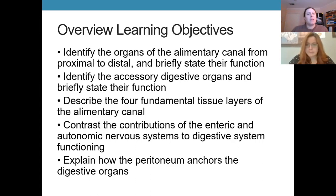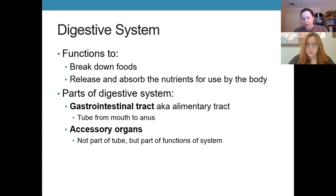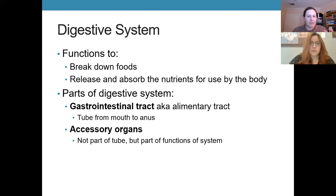The major functions of the digestive system are to break down the foods we eat and get them into our body — releasing and absorbing nutrients for use by the body. The goal for most of it is to get nutrients into the blood. As long as food is in the lumen — the inside of these hollow organs — it's not technically inside your body. It only counts as inside once it's absorbed through the tissue layers.